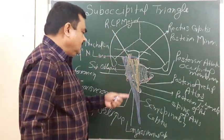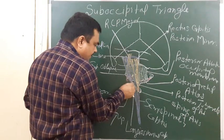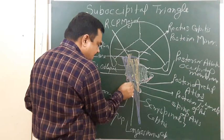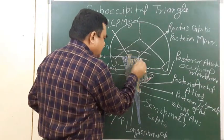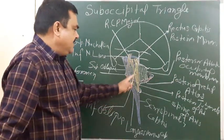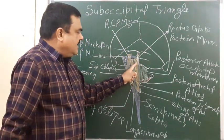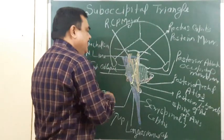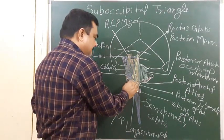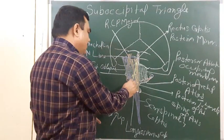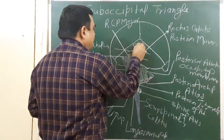One important thing: the second nerve passes below the inferior oblique muscle and turns upward. It pierces the semispinalis capitis muscle and reaches up here. It also pierces the trapezius muscle. This is the dorsal ramus — its largest cutaneous branch present at the back — this is the greater occipital nerve.